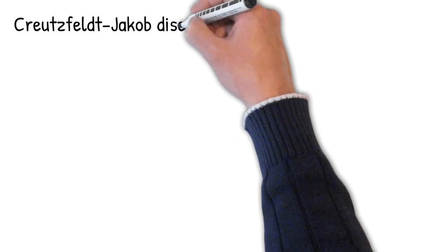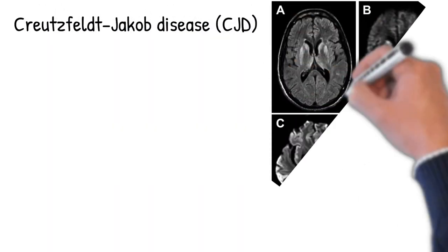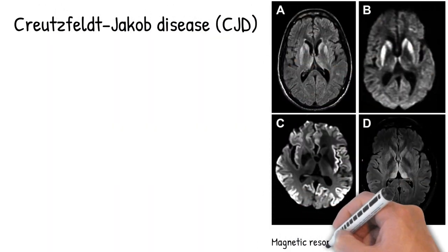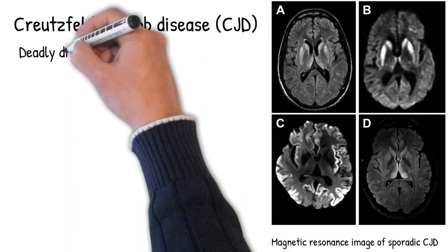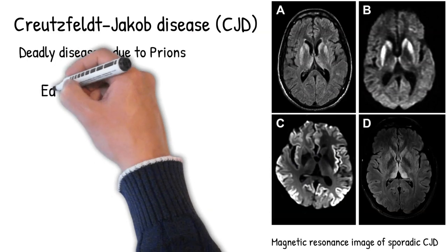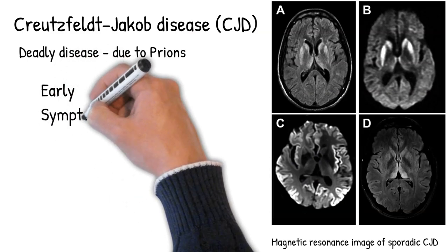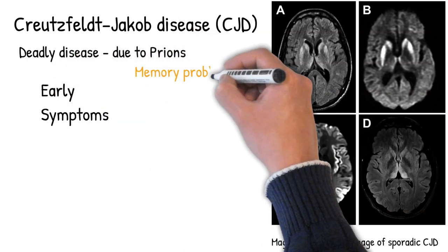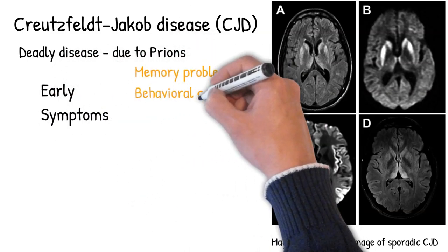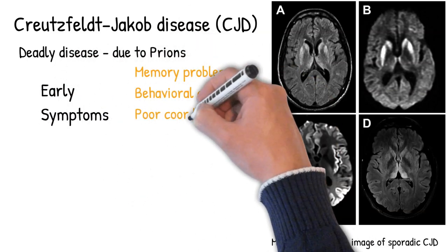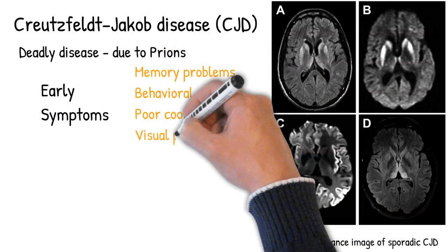Creutzfeldt-Jakob disease. CJD is a fatal disorder due to prion disease. Early symptoms include memory problems, behavioral changes, poor coordination, and visual problems.